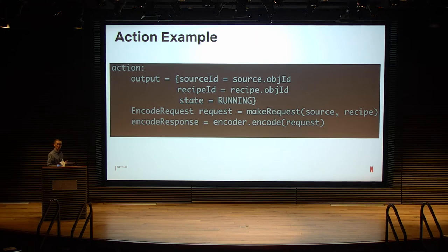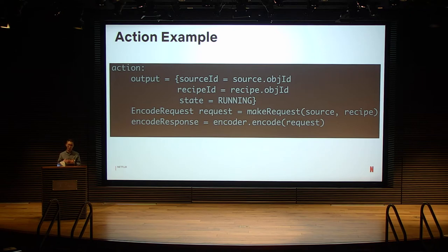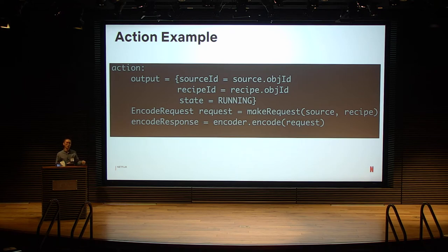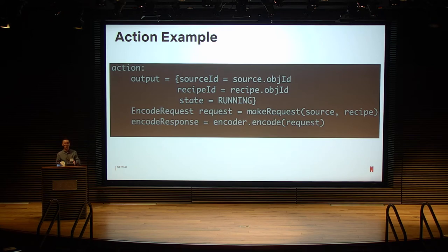The action example is relatively simple. It tells the system to create an output as a placeholder, set the state to running, then prepare an encode request. The last line invokes the remote function encoder.encode, which sends a request to the remote service function for encoding computation. The same function annotation works for both local and remote services, which makes testing really simple — you just test at the function interface level without needing to integrate a remote service for unit tests.